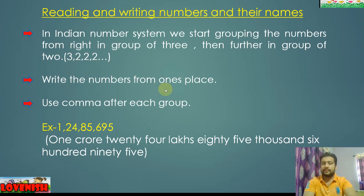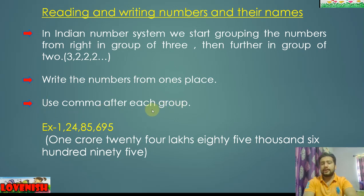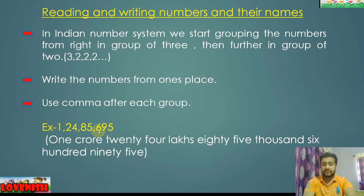When we start to write numbers from the ones place, we put each place according to the number: ones, tens, hundreds — that is the group of ones, so we put a comma. Then thousands and ten thousands — the thousands group — and we put a comma. Use a comma after each group.